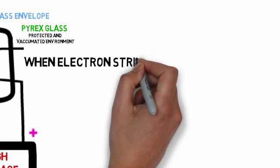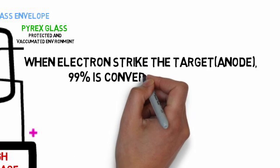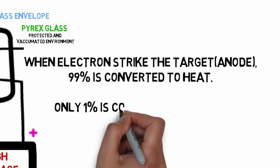When an electron strikes the target, that is the anode, 99% is converted into heat and only 1% is converted into X-rays.